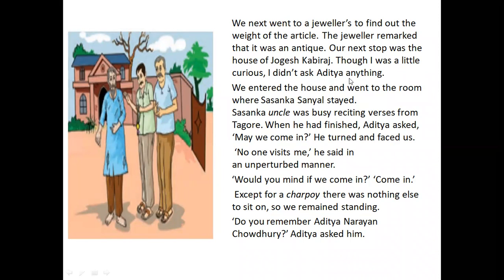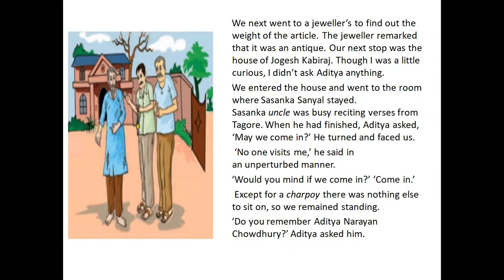Though the narrator was curious, he didn't ask Aditya anything. They entered the house and went to the room where Sasanka Sanyal stayed. Sasanka was busy reciting verses from Chavo. When he finished, Aditya asked if they could come in. Sasanka said no one visits him. There was only a cot in the room, so they remained standing. Aditya asked if he remembered Aditya Narayanan Chaudhri — that being Aditya's full name.